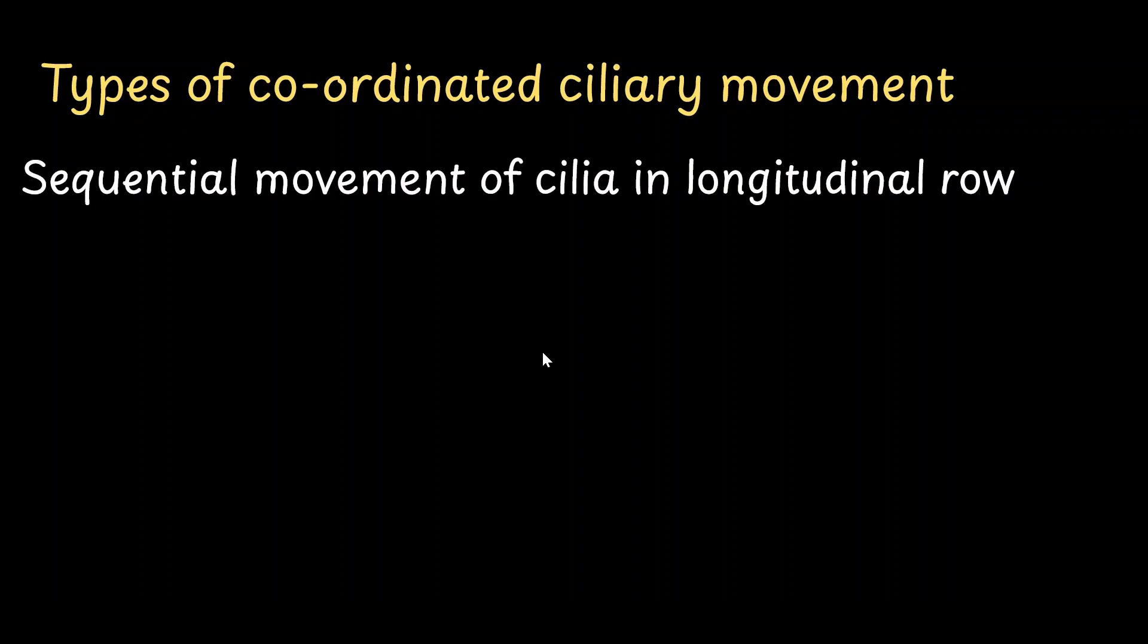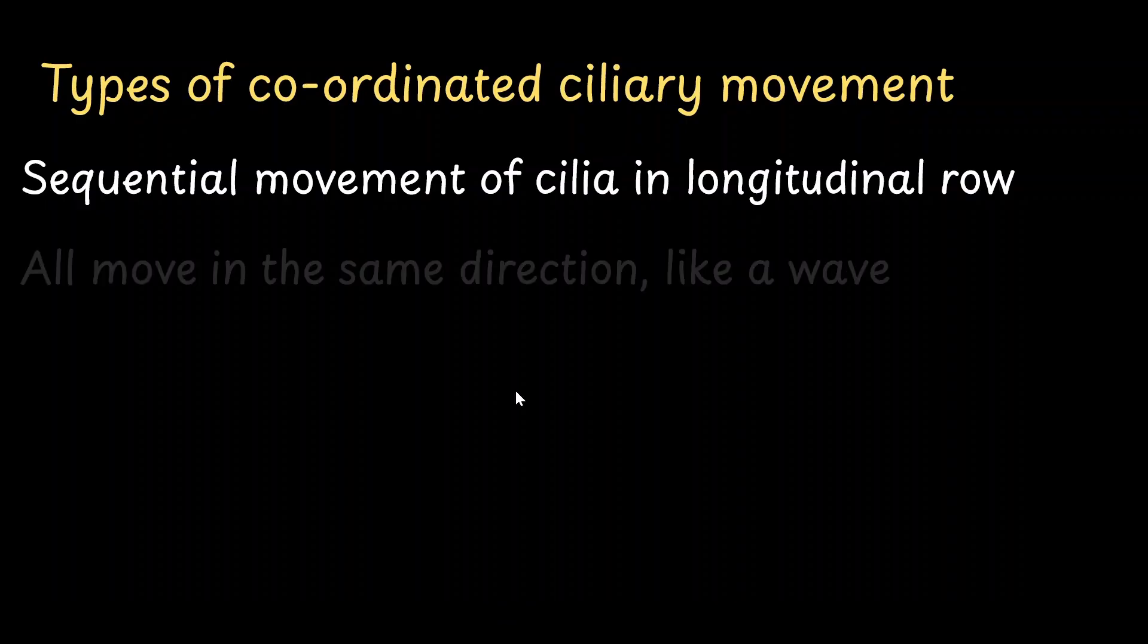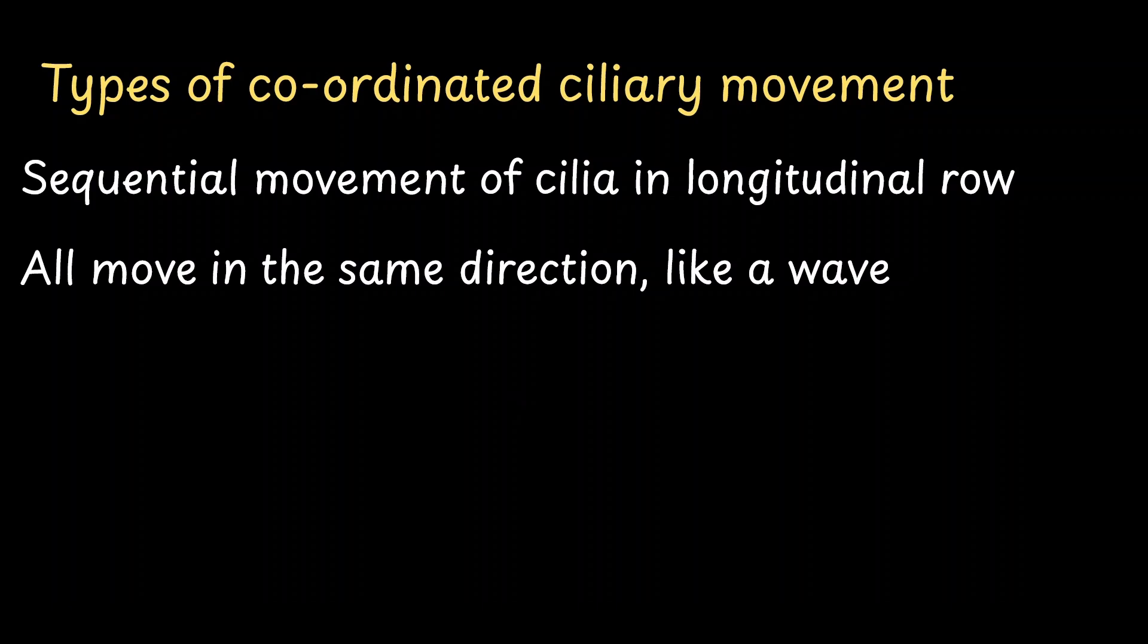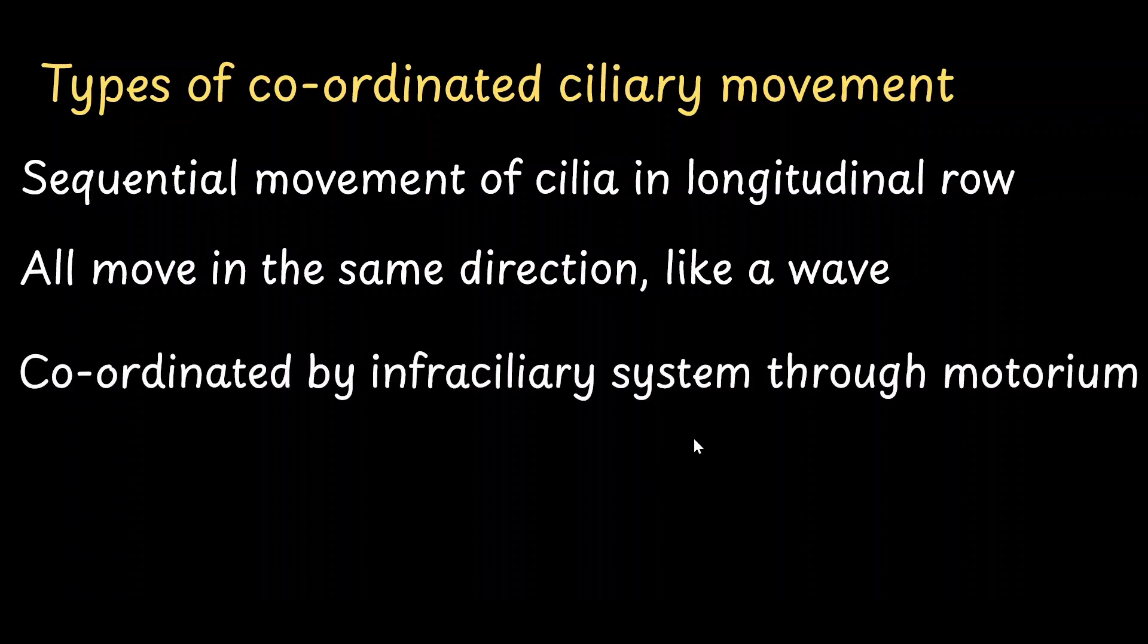The second type of coordinated ciliary movement is how the cilia in a longitudinal row are going to beat. This is a sequential movement. The cilia are all going to move in the same direction, almost like a wave. In the video about cilia, we learned that the coordinated ciliary movement is because of a structure called the infraciliary system. This system is connected to the motorium, which is a neuromotor center that is situated near the cytopharynx in Paramecium.